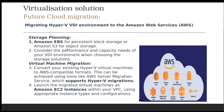In the future, one thing about this Hyper-V VDI is that it can easily migrate to Amazon AWS — using Amazon EBS for persistent block storage or Amazon S3 for object storage. Consider the performance and capacity needs of your VDI environment when choosing the storage solution. You can convert your existing Hyper-V virtual machines to AWS-compatible format using tools like the AWS Server Migration Service, which supports Hyper-V migration. Then launch the migrated virtual machines as Amazon EC2 instances within your VPC using appropriate instance types and configuration.